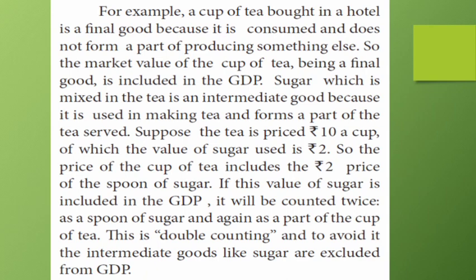For example, if you order a tea at a hotel, the tea served to you is the final good — that is what counts in GDP. The sugar, tea powder, and milk used to make the tea are intermediate goods. The final price of the tea is 10 rupees. The sugar costs 2 rupees, the tea powder costs 2 rupees, the milk costs 4 rupees, and the service costs 2 rupees — totaling 10 rupees.